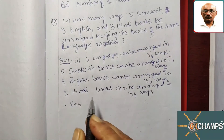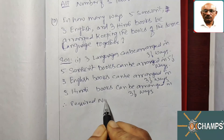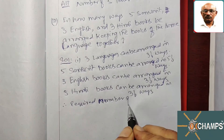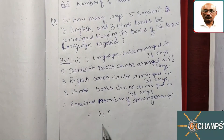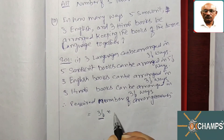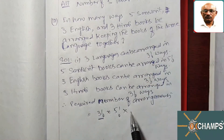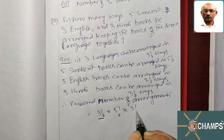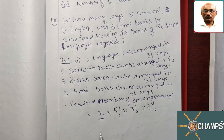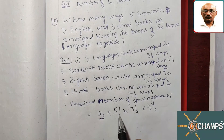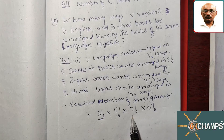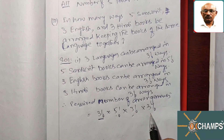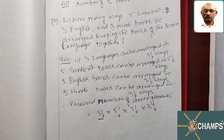Therefore, the required number of arrangements is equal to 3! × 5! × 3! × 3!. The first 3! is for arranging the three language groups. The 5! is for the Sanskrit books. The next 3! is for English books and the last 3! is for Hindi books arranged among themselves.